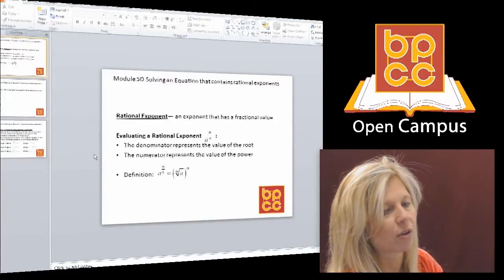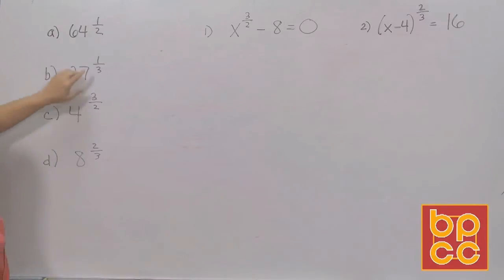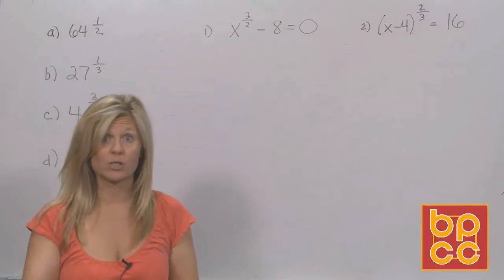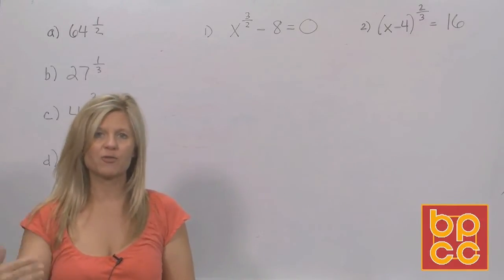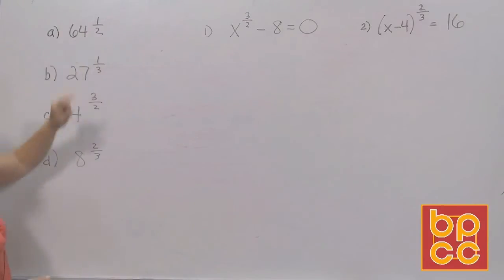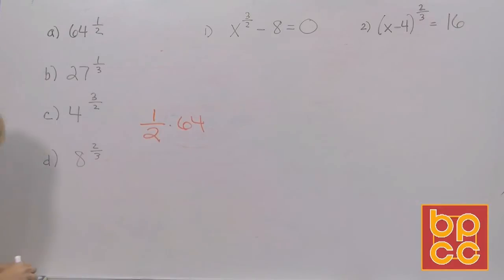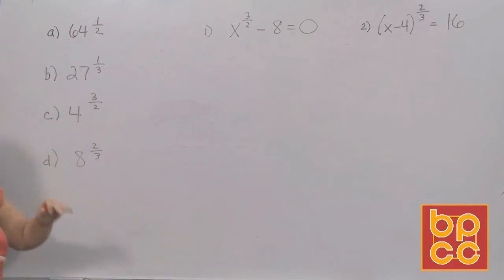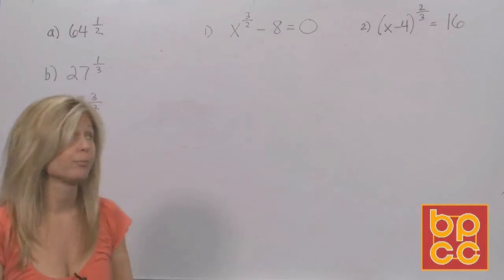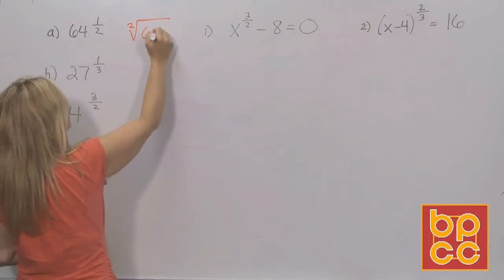Let's review working with fractional exponents using four expressions. We understand basics: 4 to the first is 4, 4 squared is 4 times 4 which is 16. Now we have 64 to the one-half. This does not mean half of 64. Every time you see an exponent that's a fraction, you immediately change it to a root symbol.